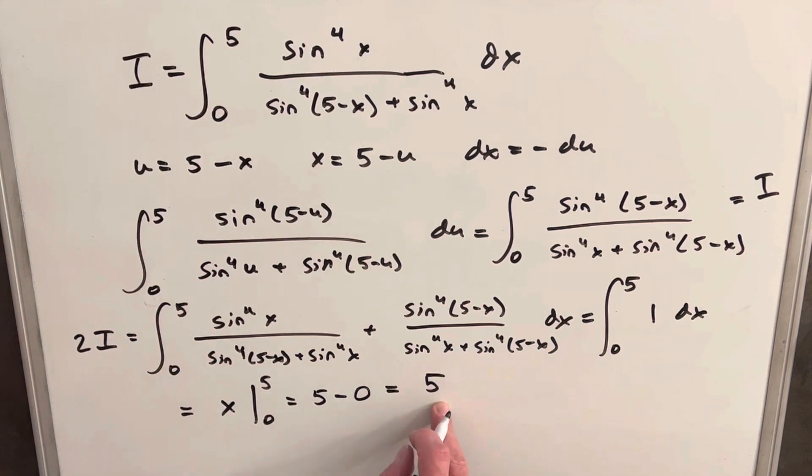And the only thing to remember is, this isn't our final answer, because we've got two copies of our integral. But that's easy to fix, we just divide by 2 on both sides, and for our final answer we have 5 halves.